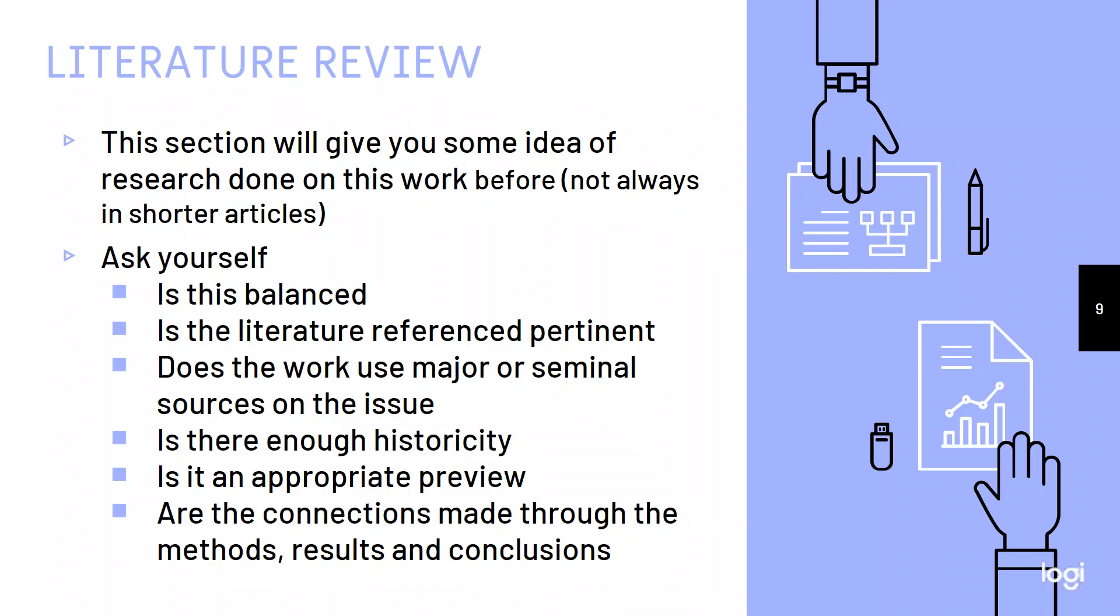So you want to ask yourself, is the literature review balanced? Are they only presenting one side of this particular argument or this particular view of the field? Is the literature reference pertinent? I can't tell you how many literature reviews I've gotten to the middle of, and I'm like, why am I here? What are you talking about? What does this have to do with anything? Does the work use major or seminal sources on the issue? If you are writing about relativity and you do not reference Einstein, we're going to have a problem, right? Even though a lot of his theories have been debunked, you still have to talk about that if you're talking about this field. So you want to be thinking, are the works seminal? Is there enough historicity? Do they go back far enough?